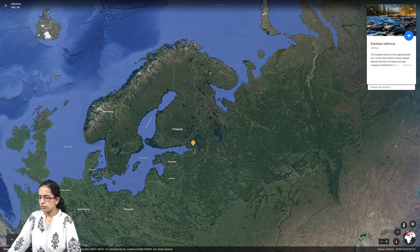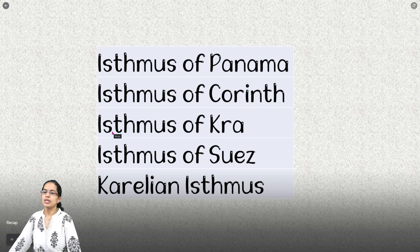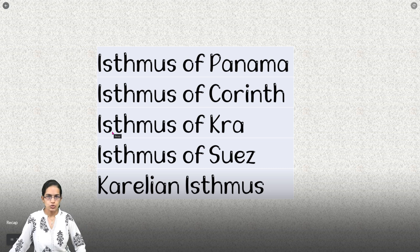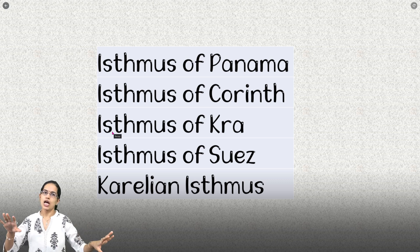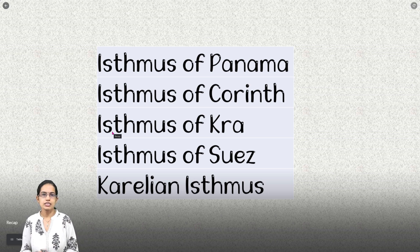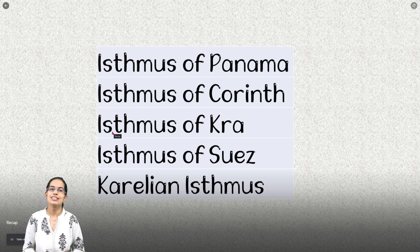So those are some of the most popular isthmuses across the globe. To recap, we discussed five isthmuses: the Isthmus of Panama, the Isthmus of Corinth, the Isthmus of Kra on the Malay Peninsula, the Isthmus of Suez which separates the Arabian Peninsula from the African landmass, and the Karelian Isthmus between Russia and Finland. We will be covering straits and major straits of the world in a separate lecture — stay tuned and have a wonderful day ahead.